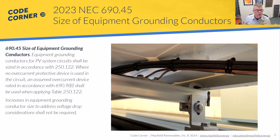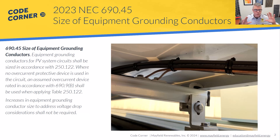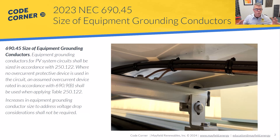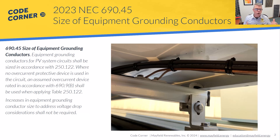The equipment grounding conductor section actually starts earlier in 690.42, so I recommend going and looking at that if you're not super familiar with it. I'd also recommend pausing and reading through the code language as I show it on the next few screens. So 250.122 as it relates to Article 690 — 690.45 says we're going to size our circuits based on that section.